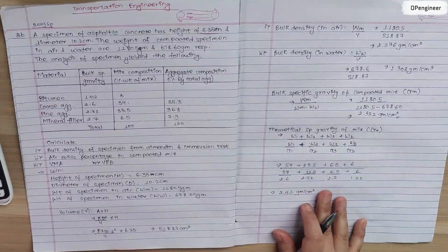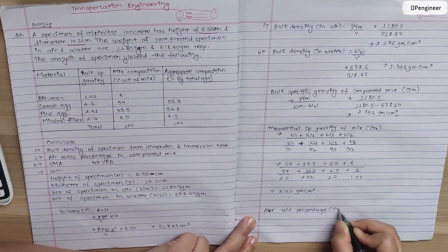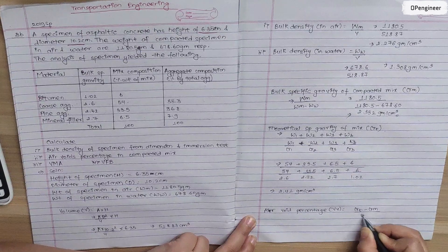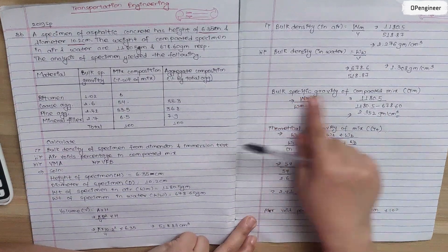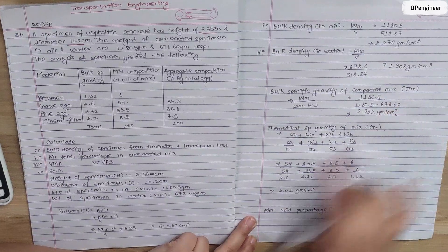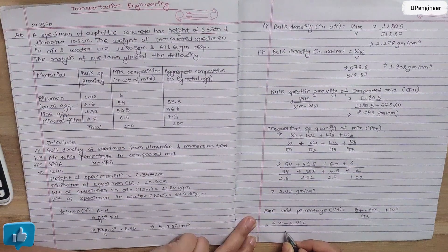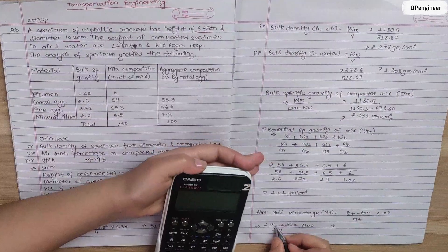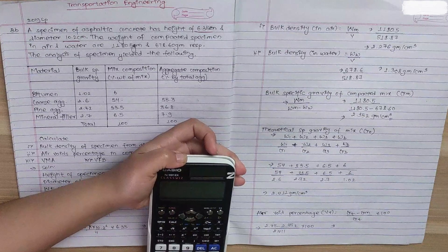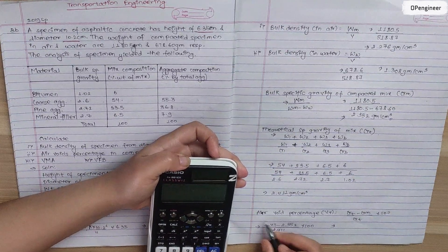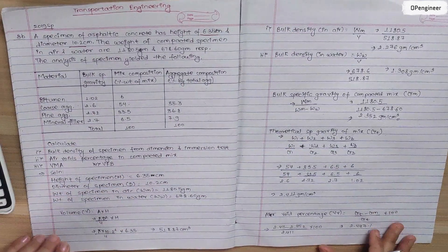Now we calculate the air void percentage (Vv). The formula is: Vv = (Gt - Gm) / Gt × 100. Here Gt is the theoretical specific gravity of mix and Gm is the bulk specific gravity of compacted mix. Substituting: (2.41 - 2.352) / 2.411 × 100 = 2.447%.